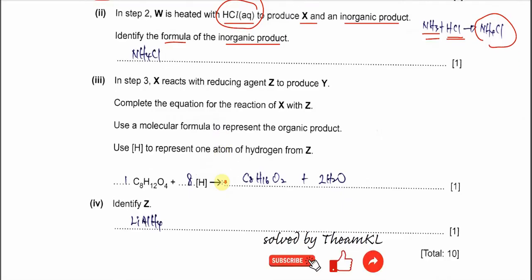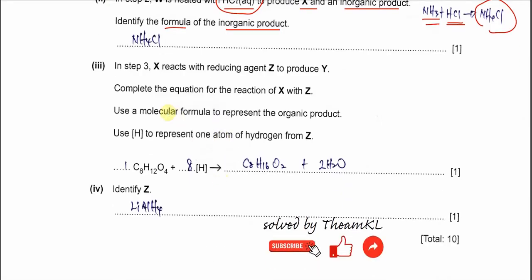For part three. In step three, X reacts with reducing agent. Because the carboxylic acid now is reduced to alcohol, the reducing agent must be lithium aluminum hydride. No others. Only this one. To produce the final products. Why? Complete the equations for the reactions of X with Z.